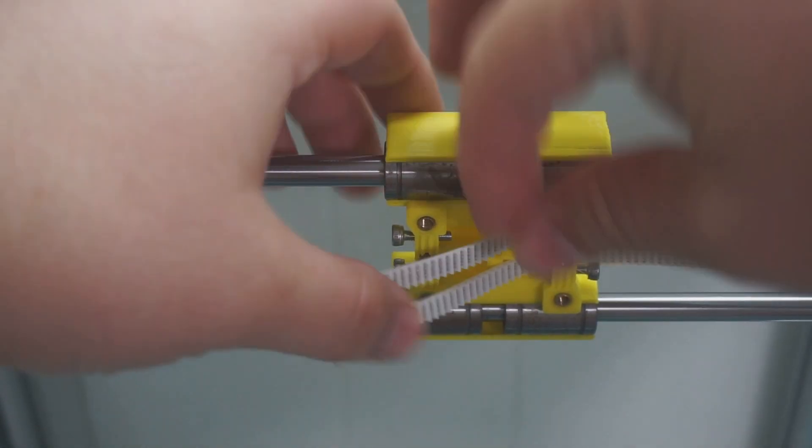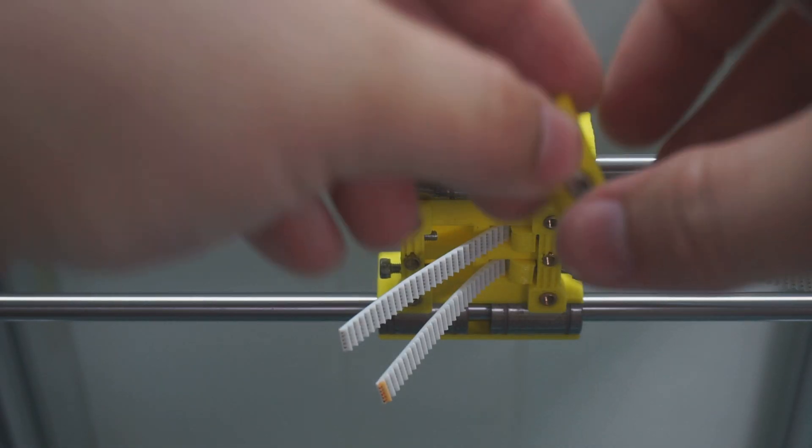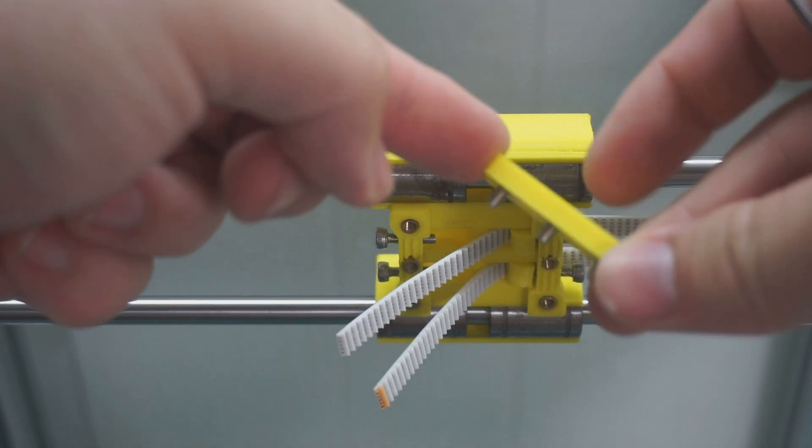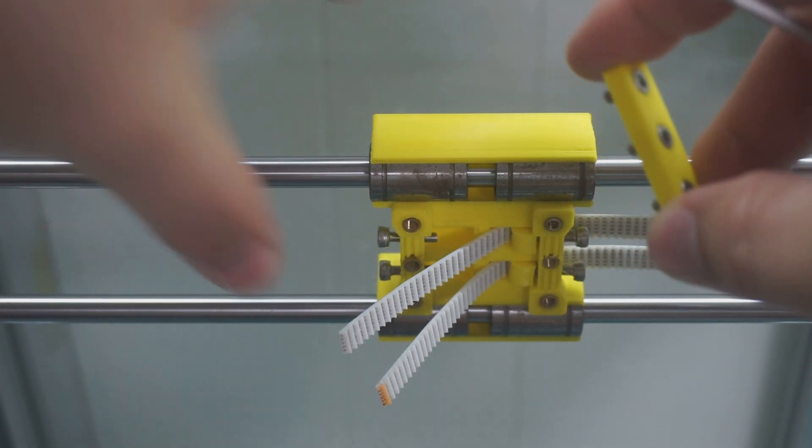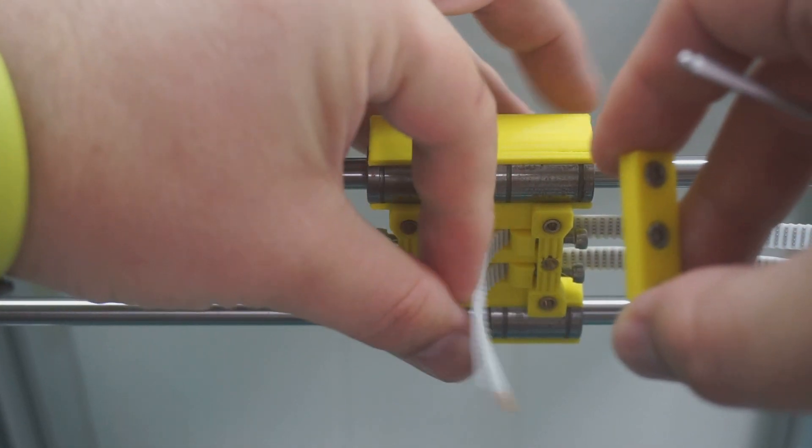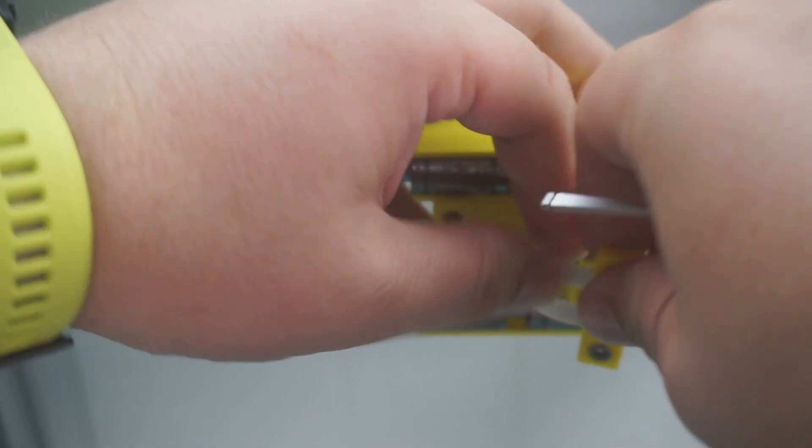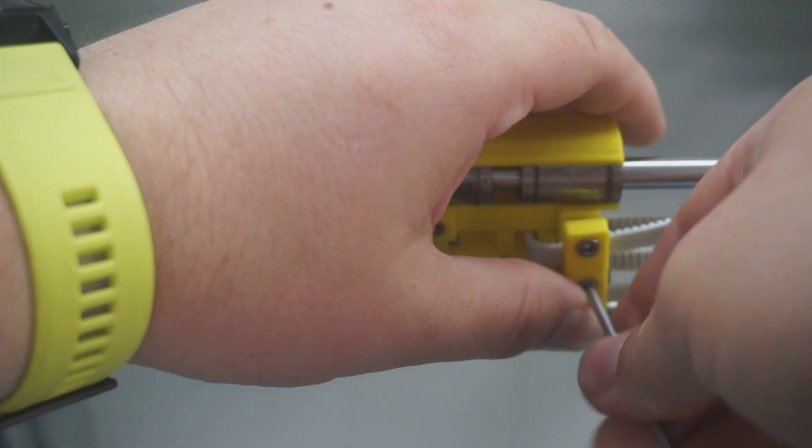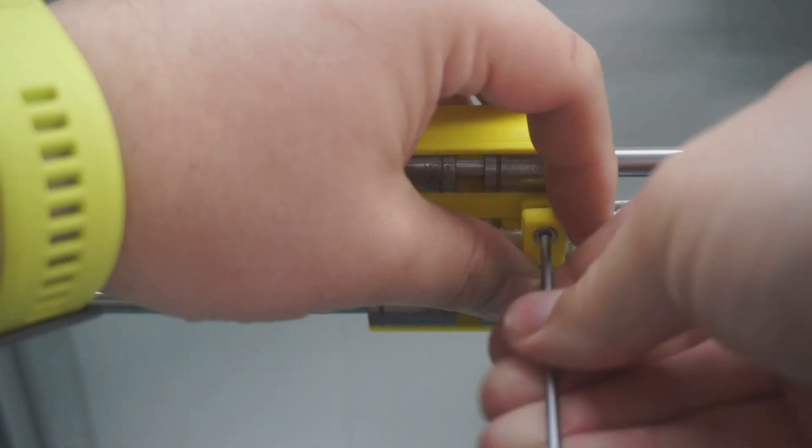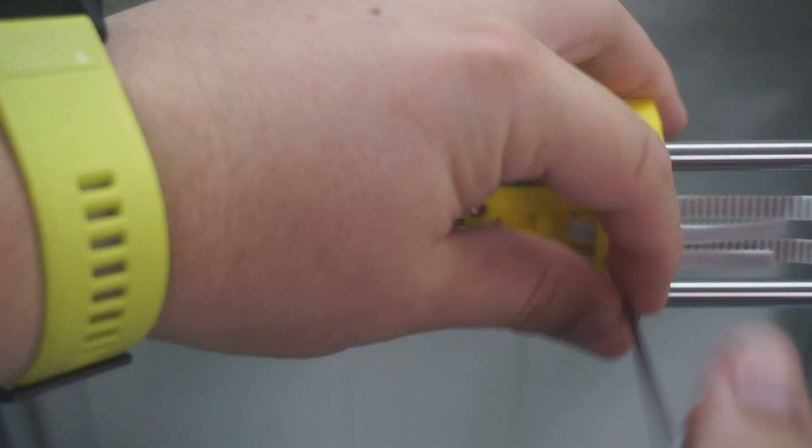Then we want to insert the little tensioning pieces. Next we fold the belts over and place the retaining clamp. So we put the clamp in place like so. I found it easiest to tighten the middle screw, then pull the belts a bit tight and then tighten the others up.